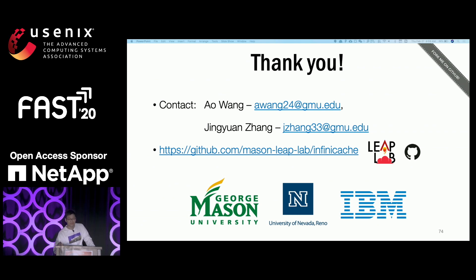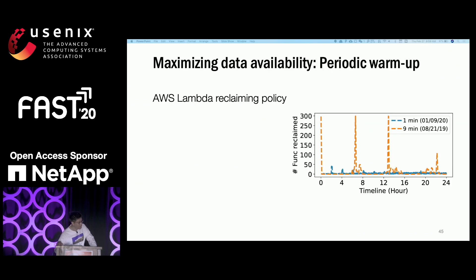Q (Nelson from Huawei): Very interesting results. I have a question about your function reclaiming rate measurement — do you measure it around the clock, 24 hours a day? A: In this experiment, we run for 24 hours and periodically trigger the functions, then summarize how many functions have been changed to different instances.